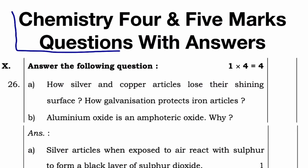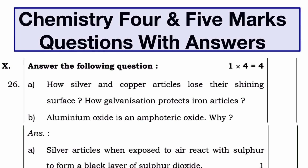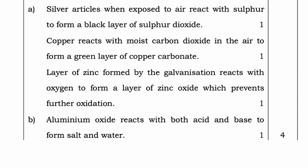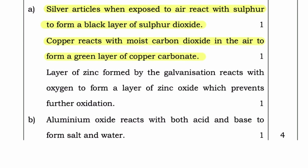Now chemistry 4 and 5 marks questions with answers. Question A: How do silver and copper articles lose their shining surface? How does galvanization protect iron articles? Note: the term 'articles' refers to objects or items made of a particular material — for example, silver and copper articles means objects made of silver and copper such as jewelry, utensils, and decorative items.